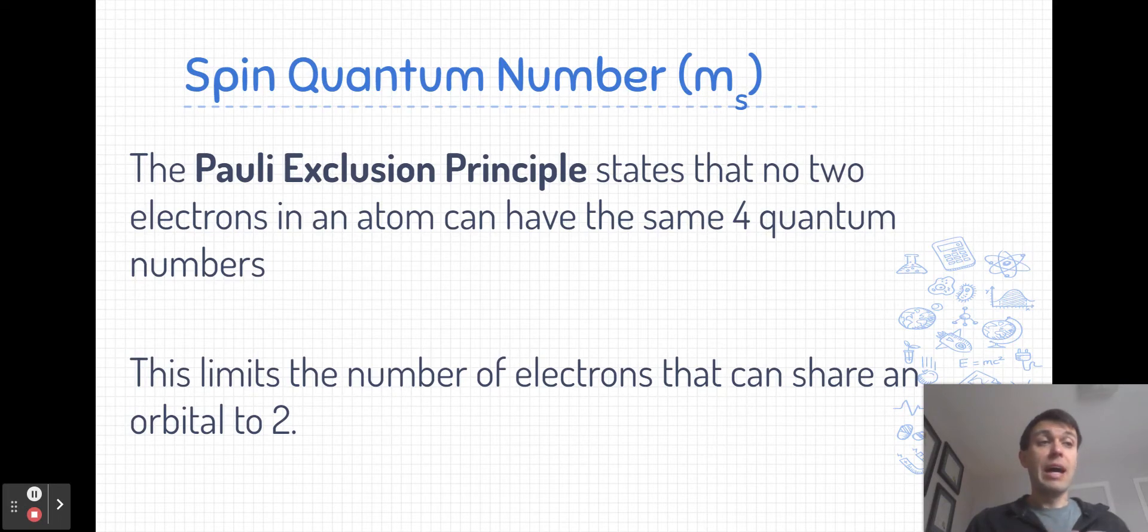As a result, this limits the number of electrons that can share an orbital to two. If you have two electrons that are at the same main energy level or in the same sublevel and are in the same orbital, they're going to have the same first three quantum numbers. But because they're in the same orbital and electrons in the same orbital have to have opposite magnetic spin states, one electron is going to have a positive one-half, one's going to have a negative one-half, and now you've used up the possible values. So this spin quantum number limits the number of electrons per orbital to two.